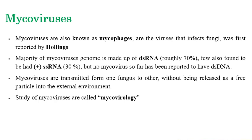The majority of mycoviruses have a genome made up of double-stranded RNA — almost 70% of mycoviruses. The remaining 30% are found to have a positive single-stranded RNA genome. But so far, no mycovirus has been reported that contains double-stranded DNA as genetic material. Mycoviruses are mostly transmitted from one fungus to another without being released as free particles into the external environment.